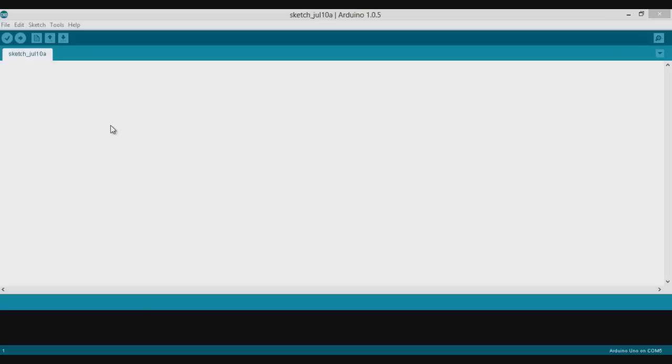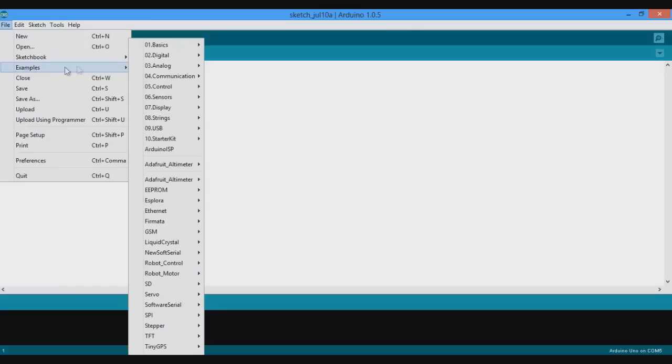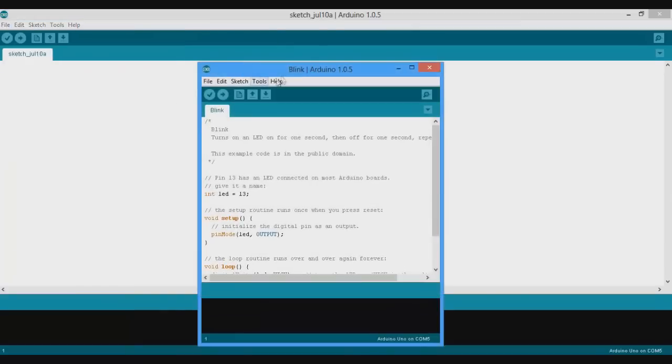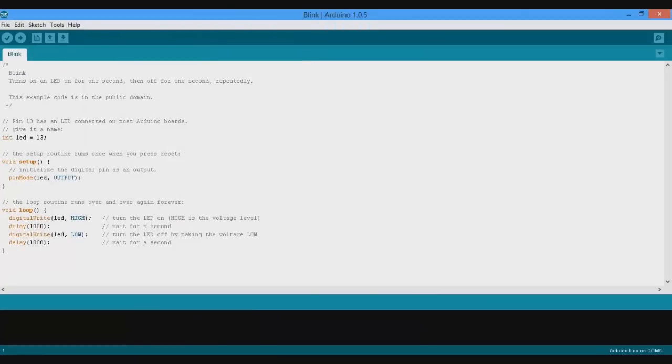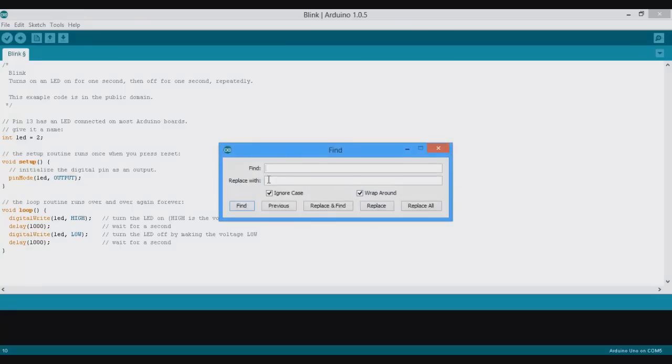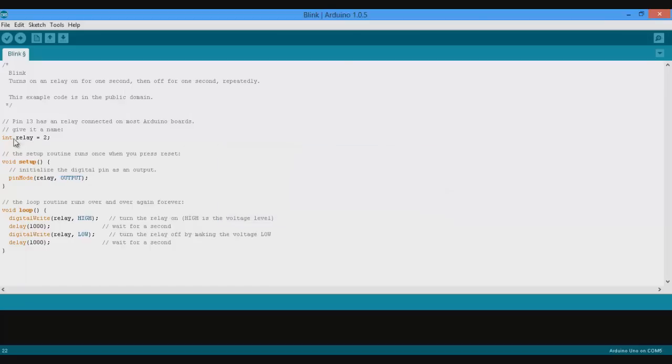So let's get onto the code. The code is very simple. All you need to do is click file examples and load up the basic blink sketch. And with this, we connected the relay to pin two. So let's just change that to pin two and let's go control F and LED. Let's change LED to relay. So go replace all. And now we have int relay equals two, pin mode relay equals output.